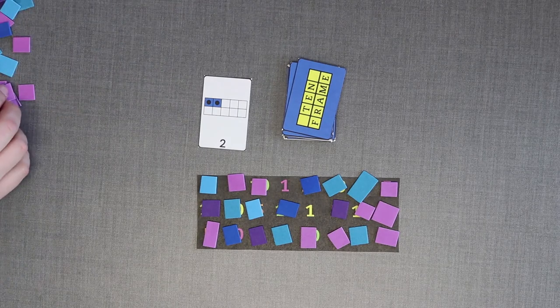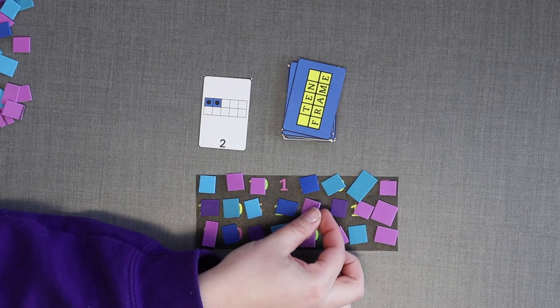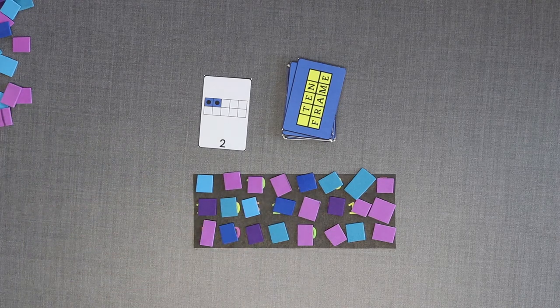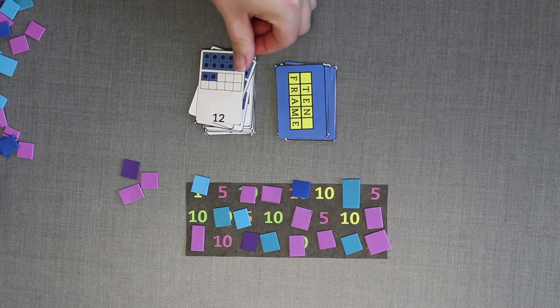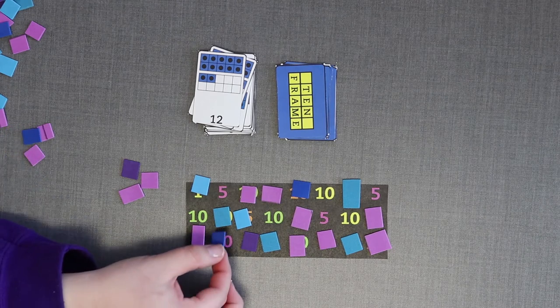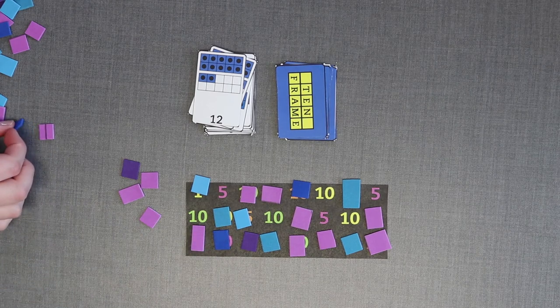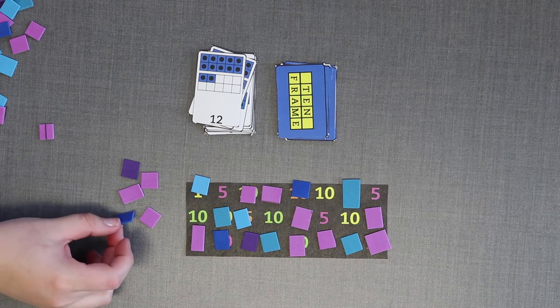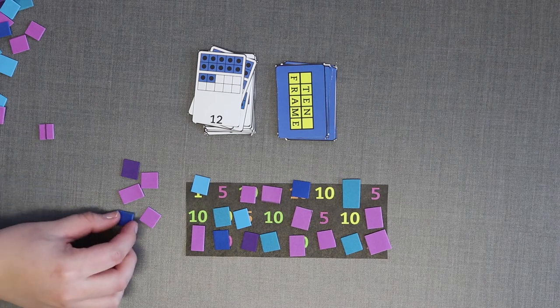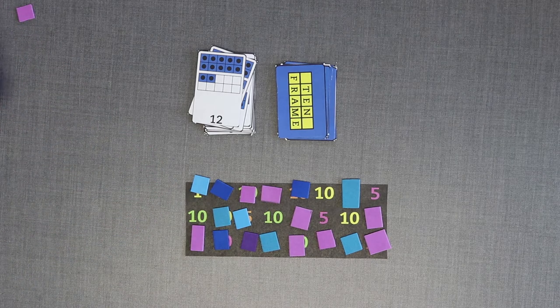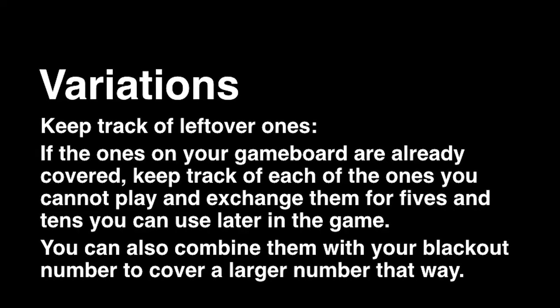There are also variations to this game. One variation includes keeping track of the leftover ones. Once the ones on your game board are all covered, keep track of the ones you cannot play by making a pile of the markers next to your game board. Once you have five ones, exchange them for a five and play a marker on a five. You can also wait until you have ten leftover ones and play a marker on the ten for your turn.